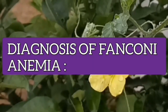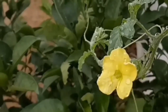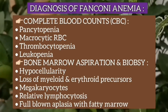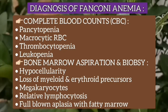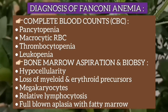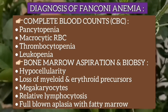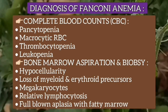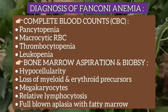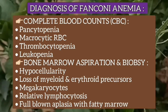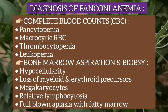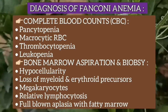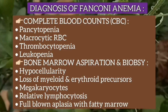Complete blood count may show trilineage pancytopenia or macrocytic RBCs. Macrocytosis, thrombocytopenia or leukopenia may precede full-blown aplasia. Bone marrow aspiration and biopsy may reveal hypocellularity, loss of myeloid and erythroid precursors, and megakaryocytes with relative lymphocytosis, or there may be full-blown aplasia with a fatty marrow.